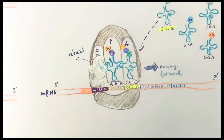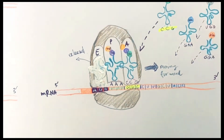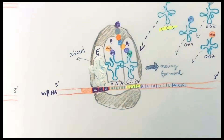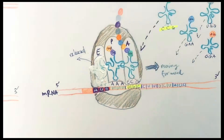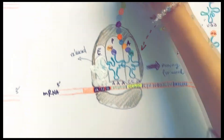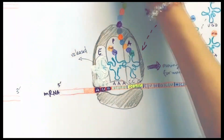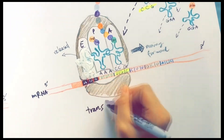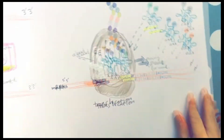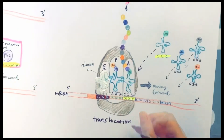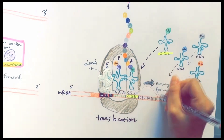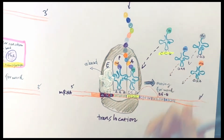The translocation of the ribosome requires the hydrolysis of GTP via another elongation factor called EF-G. Under normal cellular conditions, a polypeptide can elongate at a rate of 15 to 20 amino acids per second in bacteria.